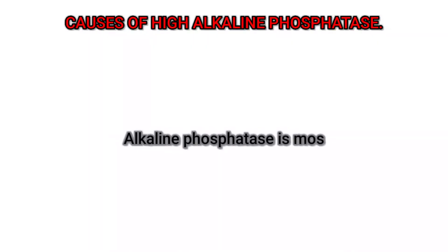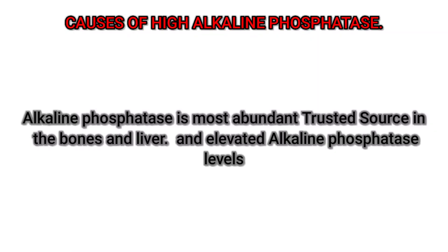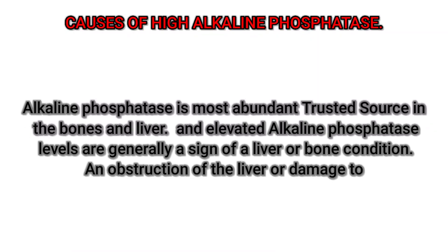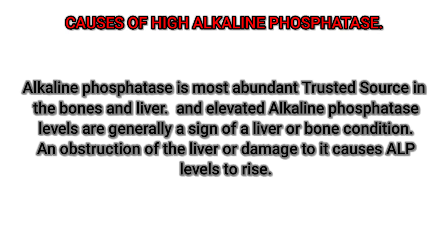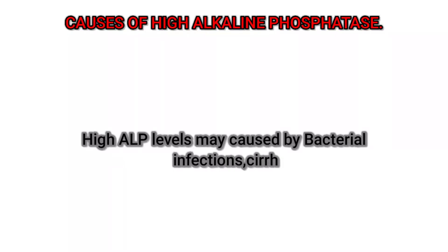Causes of high alkaline phosphatase: Alkaline phosphatase is most abundant in the bones and liver, and elevated alkaline phosphatase levels are generally a sign of a liver or bone condition. An obstruction of the liver or damage to it causes ALP levels to rise.